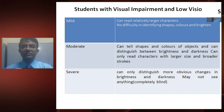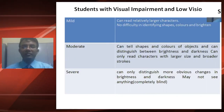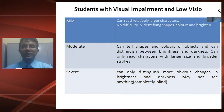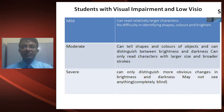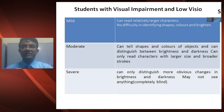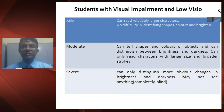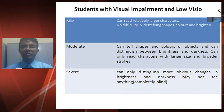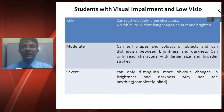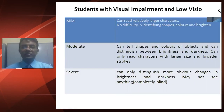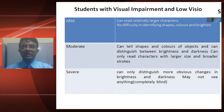Under mild classification, students with visual impairment and low vision can read relatively large characters. They have no difficulty in identifying shapes, color, and brightness.